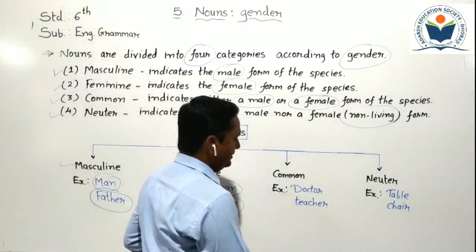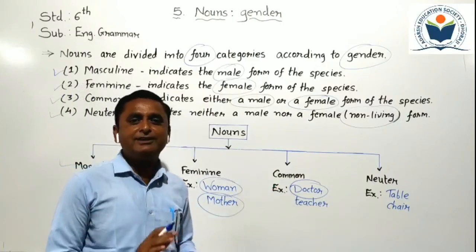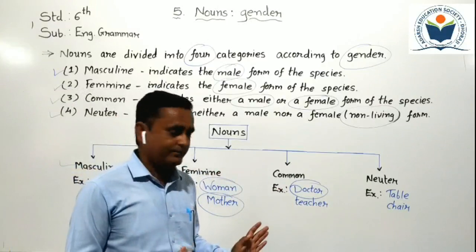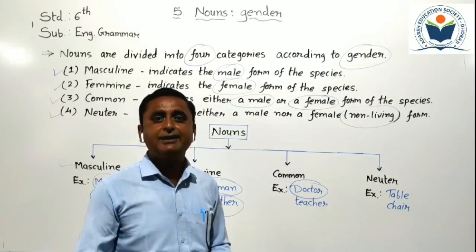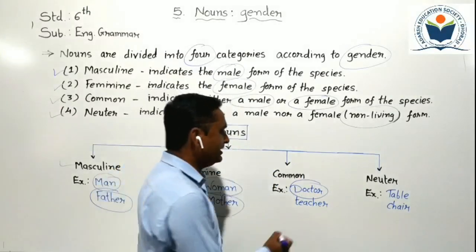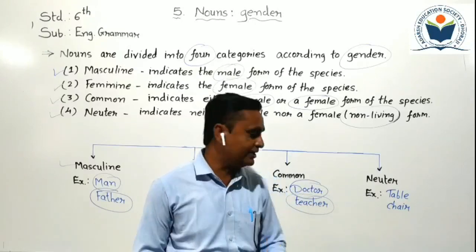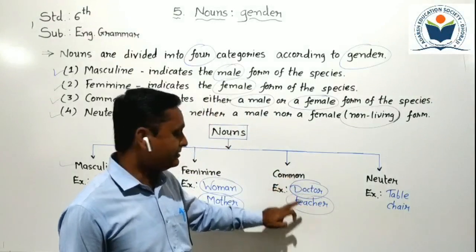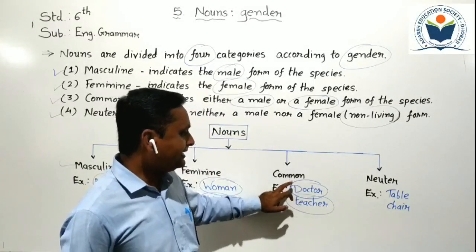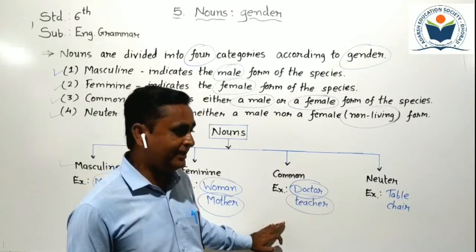Now the third one is common gender. Example: first is doctor. Doctor — it is not decided whether it is a male doctor or female doctor. If we don't know whether the doctor is male or female, it is known as a common gender. Second example: teacher. At school, you call the teacher — teacher is male or female, we can say only teacher. So here teacher becomes common gender, because it is not clarified that he is male or a female. Living things must be there for common gender.